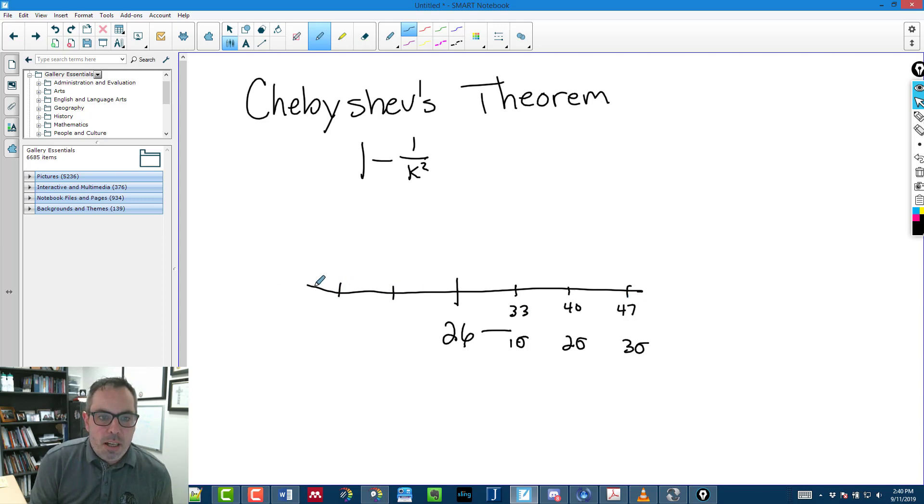So I know we go from 26 to 33 to 40 to 47. Going the other way, I'm subtracting 7 each time, so I've got 26 down to 19 to 12 to 5. I'm guessing a lot of the scores are between 5 and 47. That's just my guess. That's three standard deviations away, and most of the scores are probably between 19 and 33.